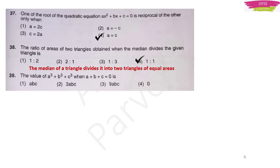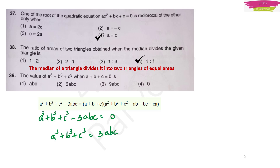The value of a³ + b³ + c³ when a + b + c = 0: use the identity a³ + b³ + c³ − 3abc = (a + b + c)(a² + b² + c² − ab − bc − ca). Since a + b + c = 0, the right-hand side becomes 0, so a³ + b³ + c³ = 3abc. Option 2 is the right answer.